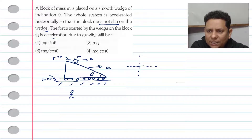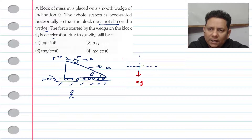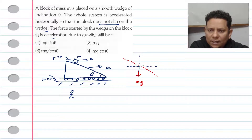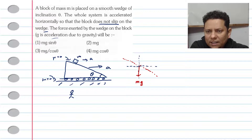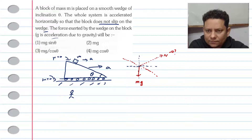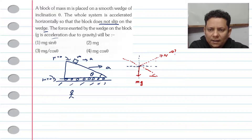Mg acts downward. This is the inclined plane with angle theta. The normal force acts perpendicular to the incline surface — that is the normal value we need to find.